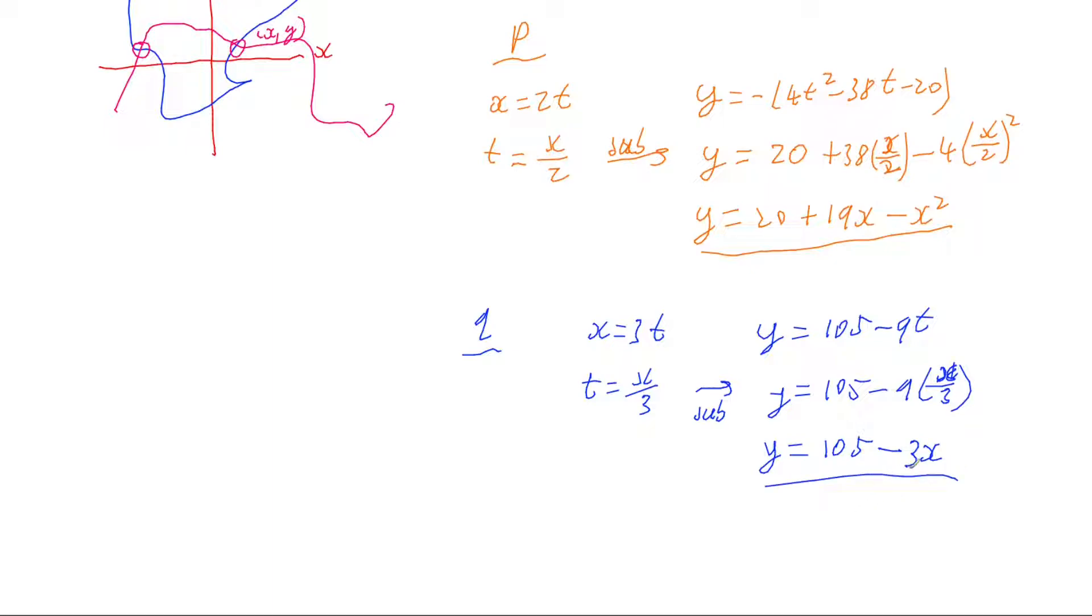So now we've got our two equations in Cartesian form and we now want to find where do they cross and if they cross. So what we're doing here is simultaneous equations. We want to see if these two equations, equation 1 and equation 2, have a simultaneous solution and what that solution is. That will tell us our crossing points.